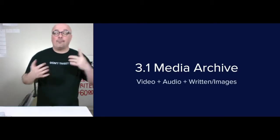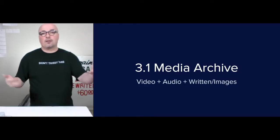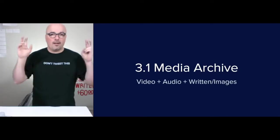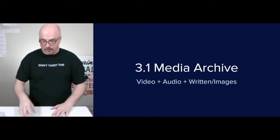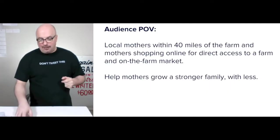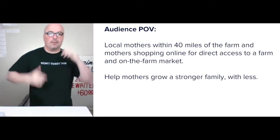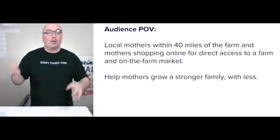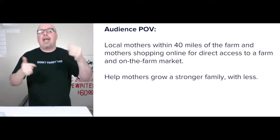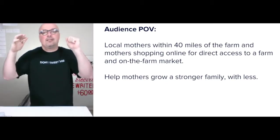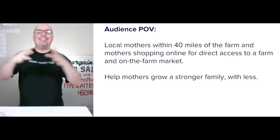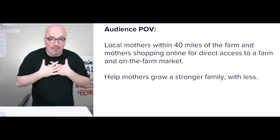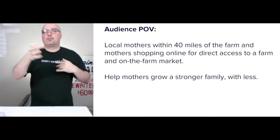The media archive — first and foremost, keep it simple. I focus on storing everything on the website, because that's land the brand itself owns — it's a brand asset. The media plan: I'd start with local mothers and parents within 40 miles of the farm, and parents that shop online for direct access to a farm and on-farm market — help them grow a stronger family with less, all encapsulated under 'farm to their table.' The show strategy would be starting with a Q&A where Jessica and her team, the King Corbett Farms family, answer parent questions.